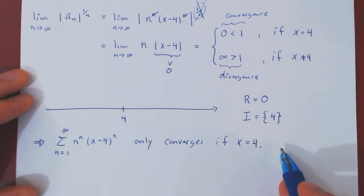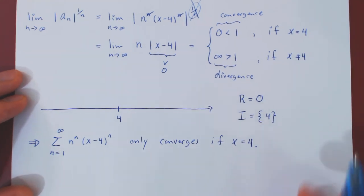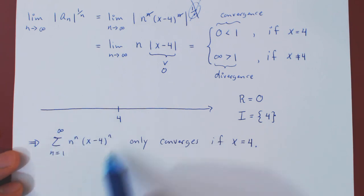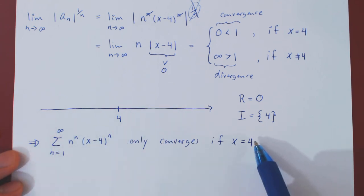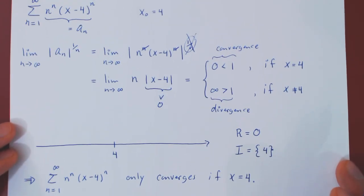So this really is the opposite of the previous example. The previous example of the power series converged for all values of x, and now this power series only converges at a single value of x, namely, the center of the series. And that's it.